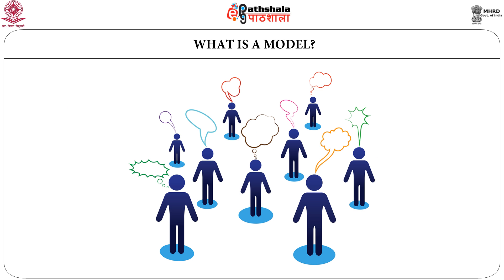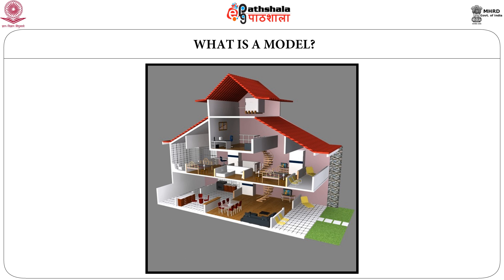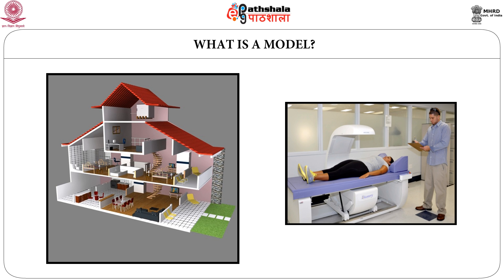Now we come to define what is a model. Depending on the context, a model may mean different things to different persons. For example, a model of a house may try to graphically illustrate the layout or floor plan of different components such as number of bedrooms, their sizes, lobby, kitchen, toilet, etc. In a medical science context, a model may demonstrate the functioning of an organ in a human body — for example, how the human heart beats — and a model of the human heart can graphically picturize the beating of a heart.